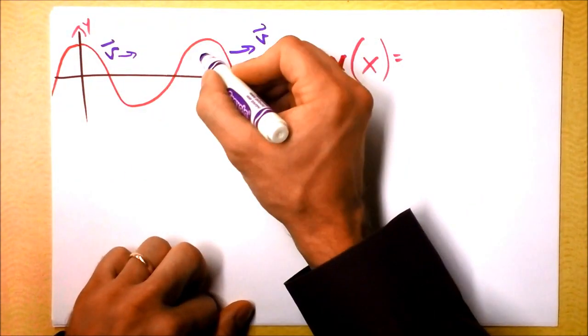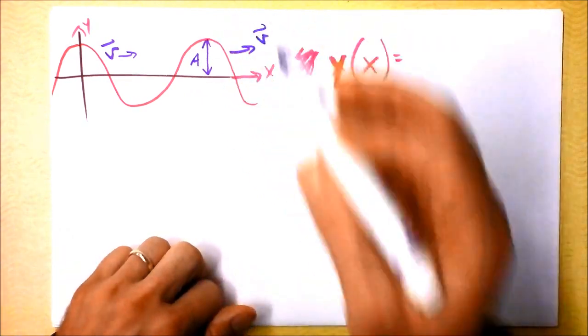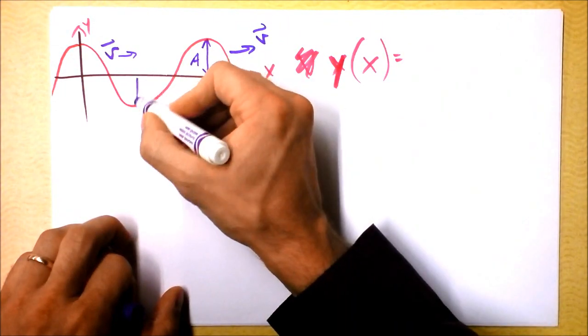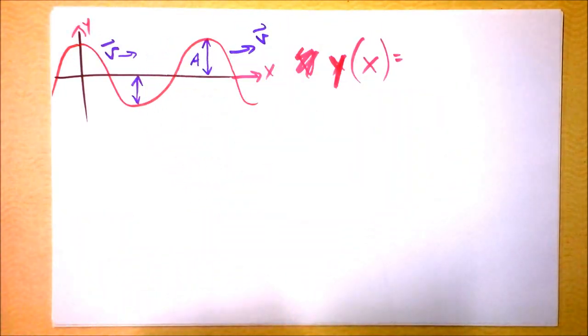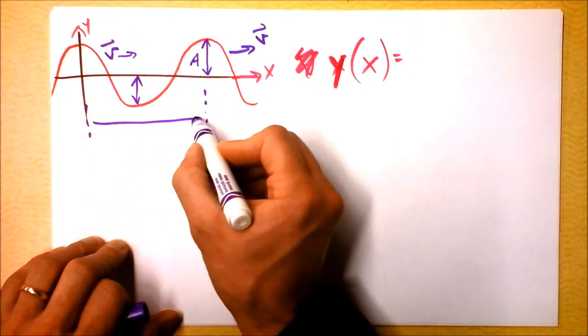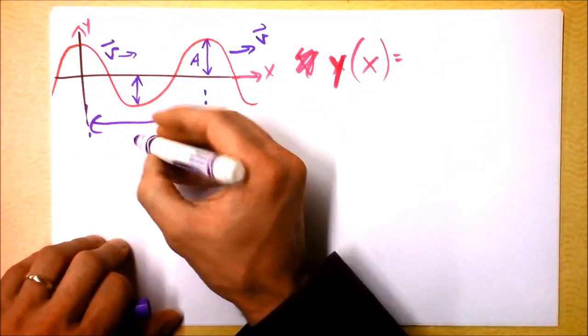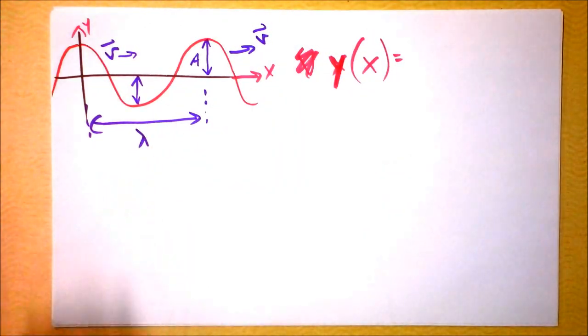So let's label some things in this picture. We know that this is going to be A, that's the distance between there and there, it's also this distance right here, and this length from here to here, that's a length of peak to peak, that's a wavelength, so we'll call it lambda.